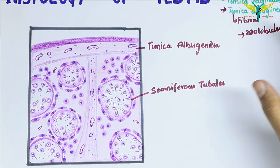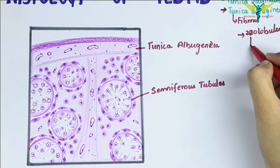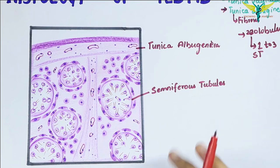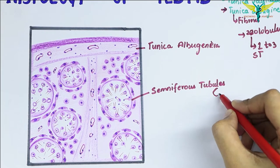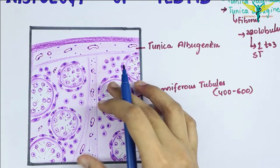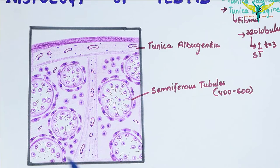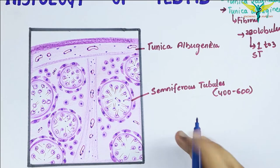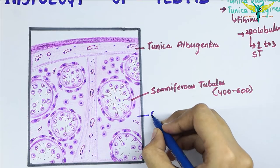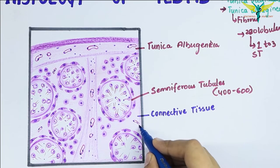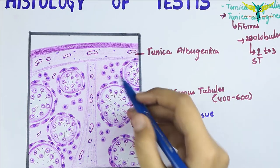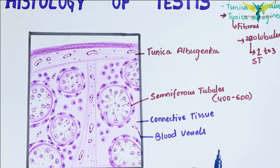Each lobule has one to three seminiferous tubules, so the total number of seminiferous tubules varies between 400 to 600. These seminiferous tubules are separated by connective tissue which contains blood vessels and some groups of interstitial cells of Leydig. These are the blood vessels, and these grouped cells are called the interstitial cells of Leydig.